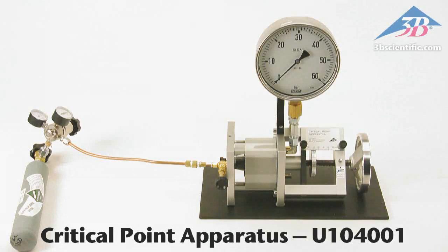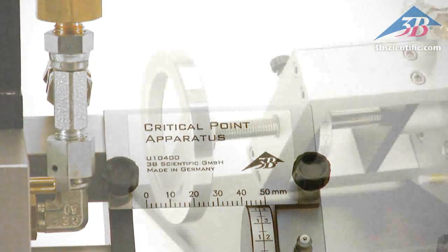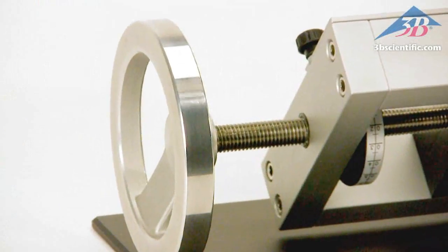The critical point apparatus item number U104001 from 3B Scientific. The critical point apparatus is unique in that it does not use mercury.